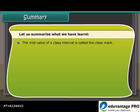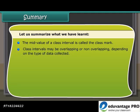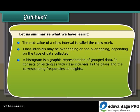The difference between the upper and lower class limits is called the class size. The mid-value of a class interval is called the class mark. Class intervals may be overlapping or non-overlapping depending on the type of data collected. A histogram is a graphic representation of grouped data. It consists of rectangles with class intervals as the basis and the corresponding frequencies as heights.